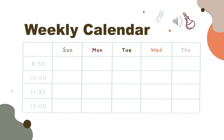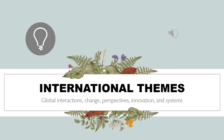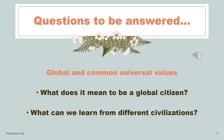Regarding the weekly plan or calendar, we're going to have five classes per week, aligned in the BCB classroom with varied sources and content. As you can see in our book, we'll be covering various themes in relation to universal and global contexts — like global interactions, change, perspectives, innovations, and systems — answering questions like what does it mean to be a global citizen and what can we learn from different civilizations.